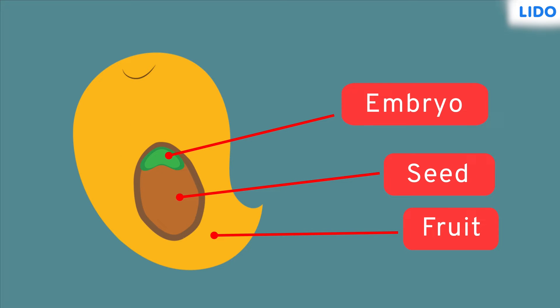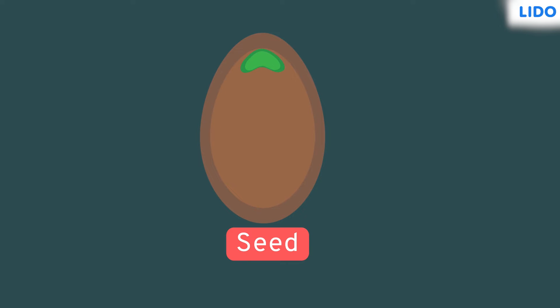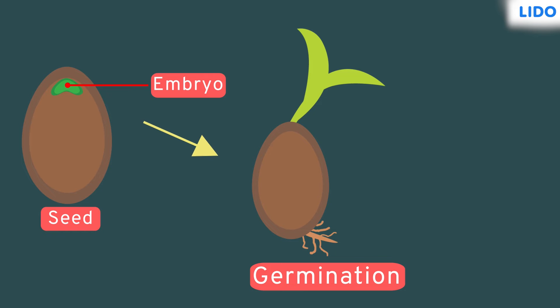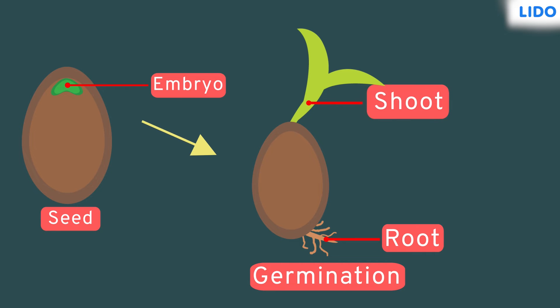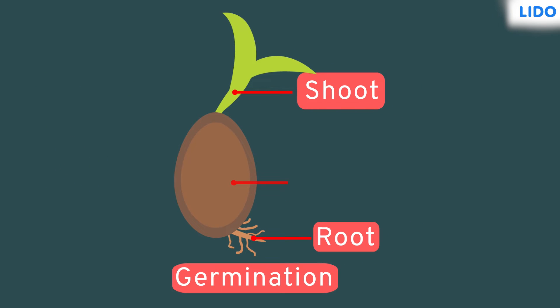Let's look at the seeds. This is a teeny tiny baby plant. The embryo later grows into the roots and shoots. This is a cotyledon.